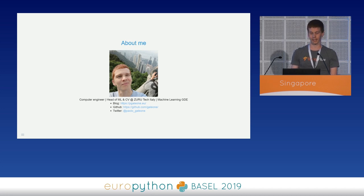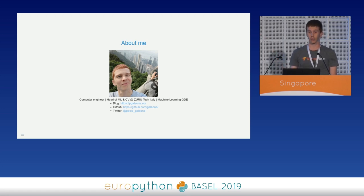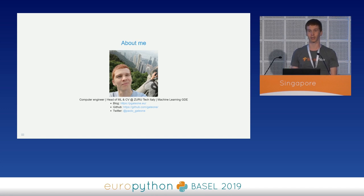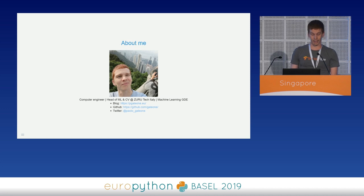In fact, I blog about TensorFlow — you can see the address of my blog there. I answer questions on Stack Overflow about TensorFlow almost daily, I write open source software using TensorFlow, and I use TensorFlow every day at work. For this reason, Google noticed this strong passion and awarded me with the title of Google Developer Expert in Machine Learning. I have a blog and I invite you to go read it, mainly because this talk is born from a three-part article that I wrote about TF function and Autograph.